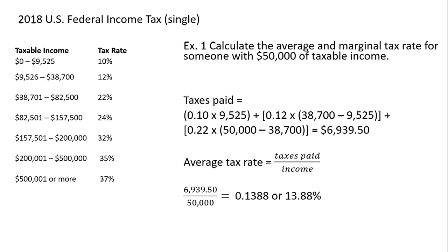The average tax rate is simply your total taxes paid divided by your income. So six thousand nine hundred thirty-nine dollars and fifty cents divided by fifty thousand gives you an average tax rate of thirteen point eight eight percent.